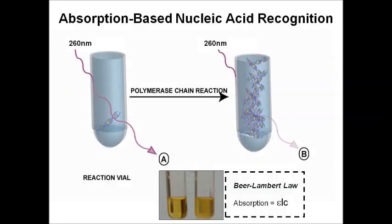Absorption is the easiest method — all you need is a spectrophotometer. After running PCR and generating millions of DNA amplicons, we exploit the fact that nucleotides have an aromatic ring and absorb ultraviolet light at 260 nanometers. Based on the Beer-Lambert Law — where absorption equals the extinction coefficient times the path length times the concentration — you can determine how much DNA you have.